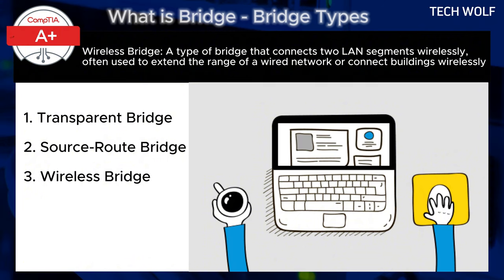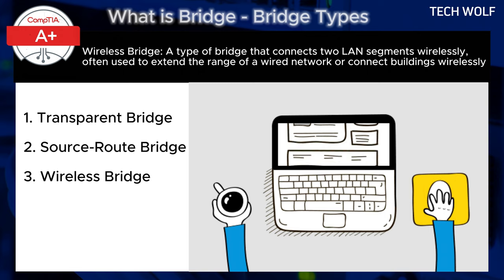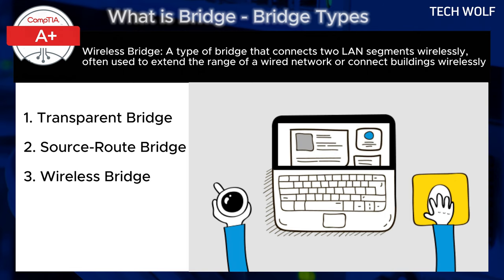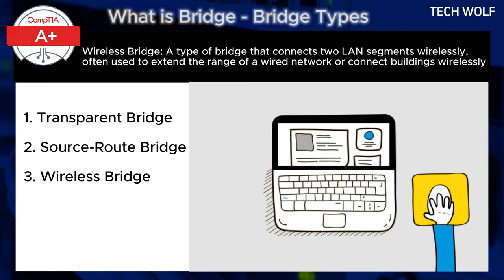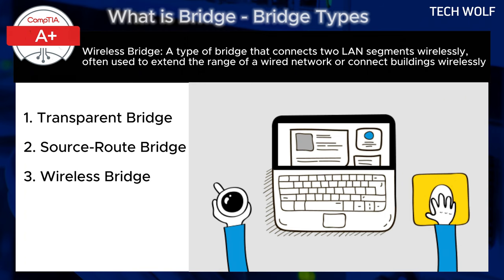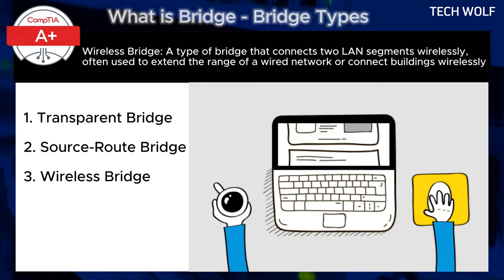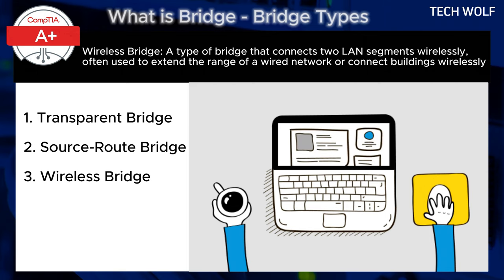Bridges are commonly used in both wired and wireless networks to extend coverage or link different departments or buildings. In essence, a bridge helps streamline communication within a network, keeping traffic organized and ensuring efficient data flow between connected segments.